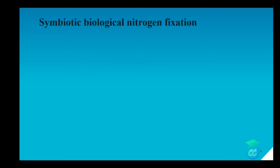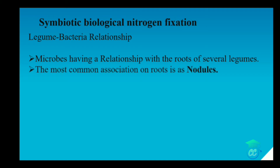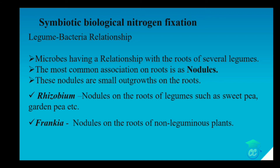Symbiotic biological nitrogen fixation is a relationship between leguminous plants and bacteria. The microbe has a relationship with the root of several leguminous plants, and the most common association is the formation of nodules — small outgrowths on the root. The example for symbiotic biological nitrogen fixation is Rhizobium, which forms nodules on the root of leguminous plants such as sweet pea and garden pea. Frankia forms nodules on the root of non-leguminous plants. Both Rhizobium and Frankia can be free living as well as symbionts.